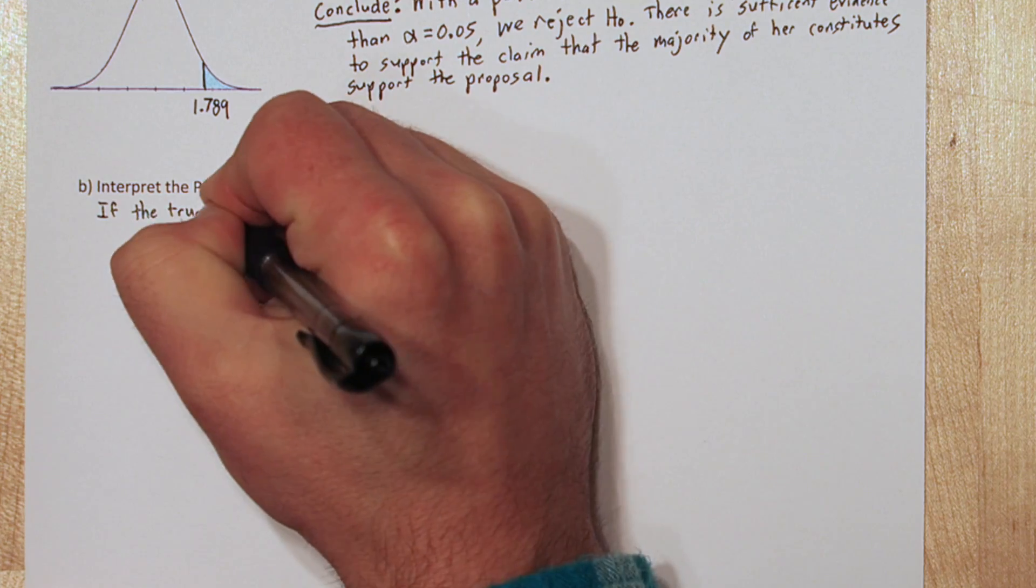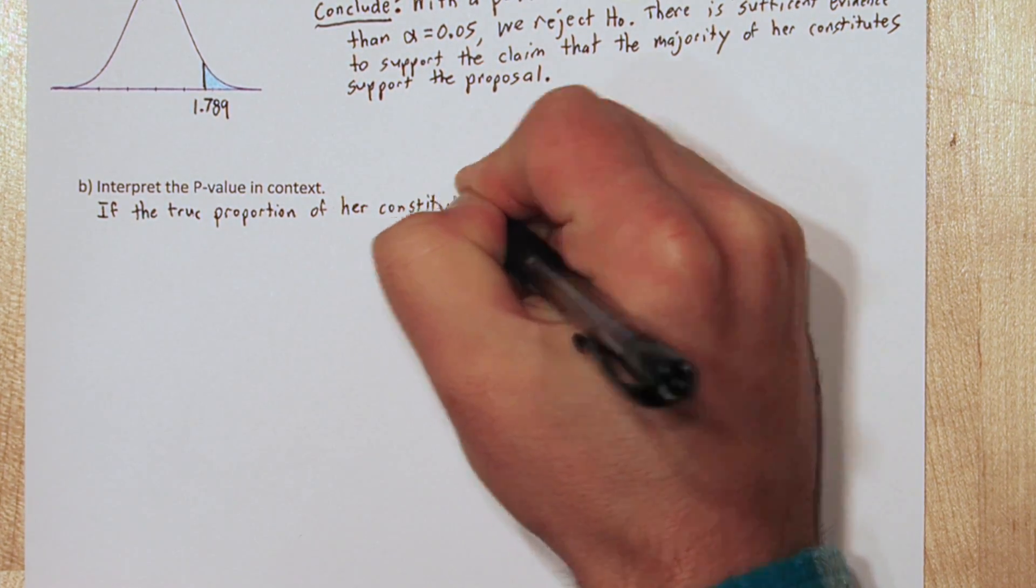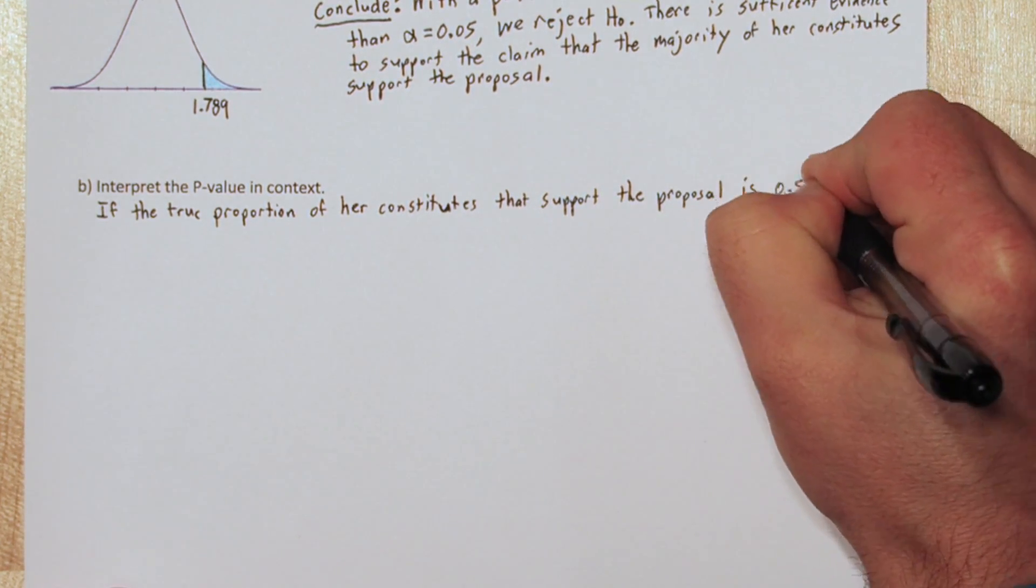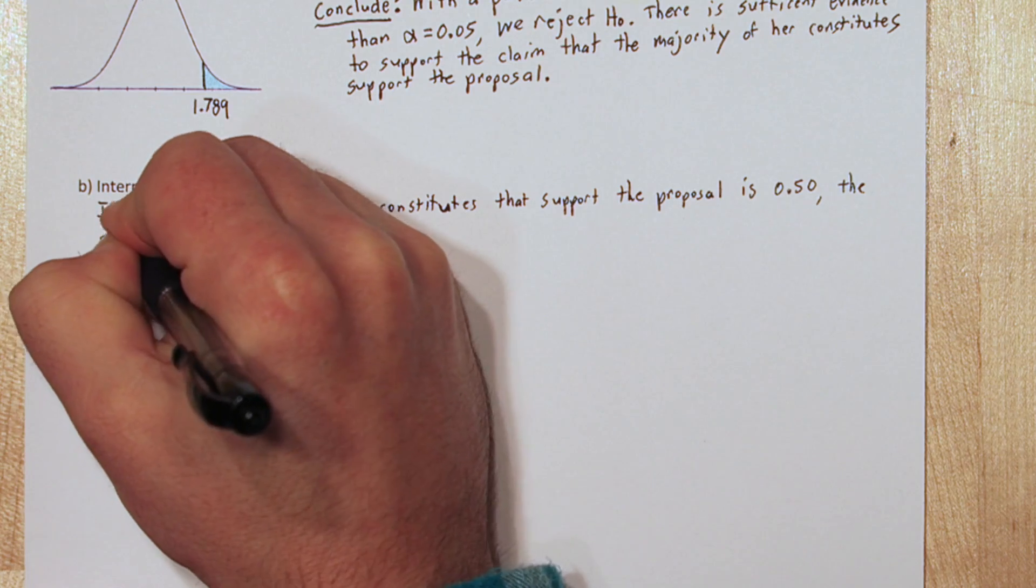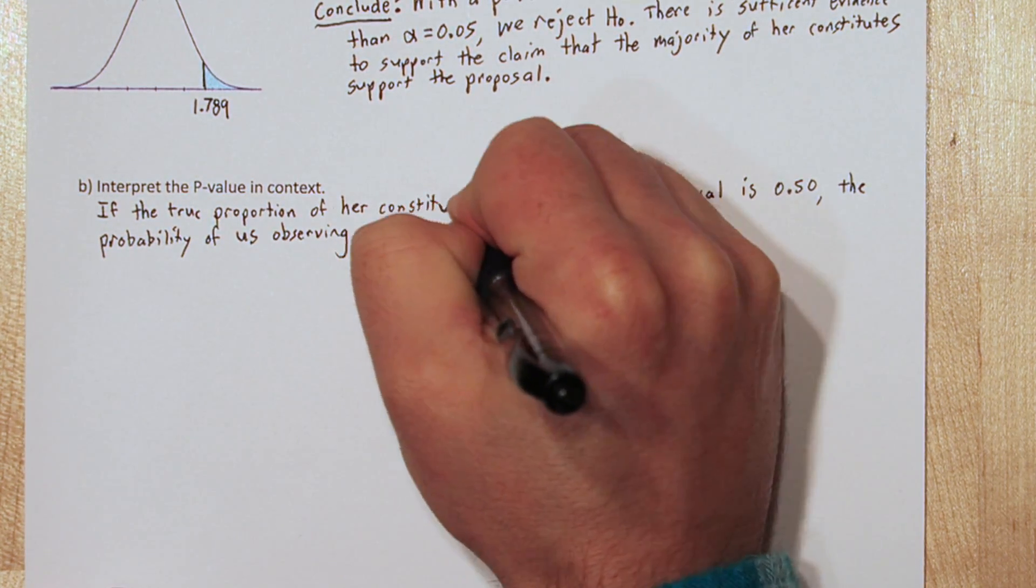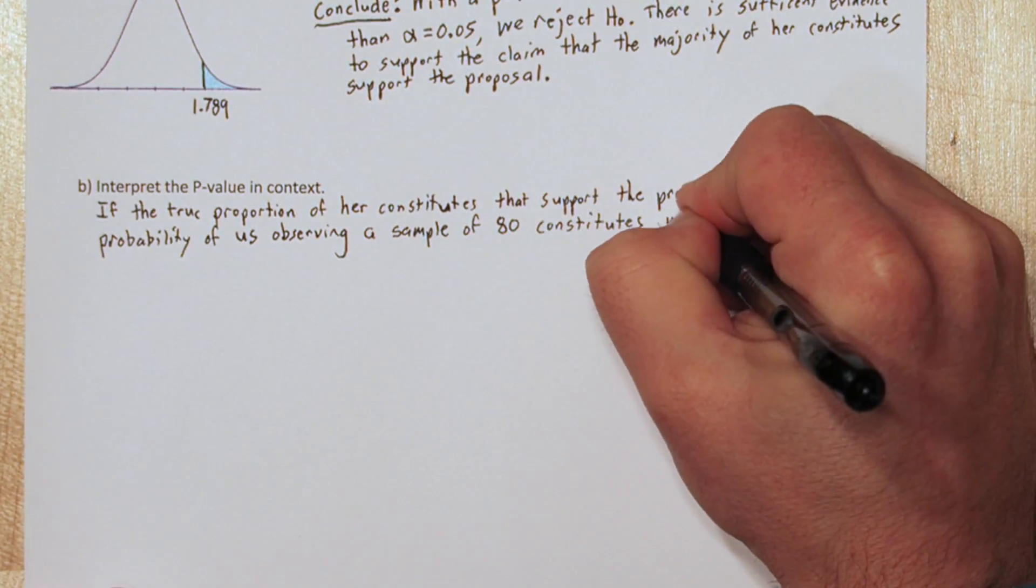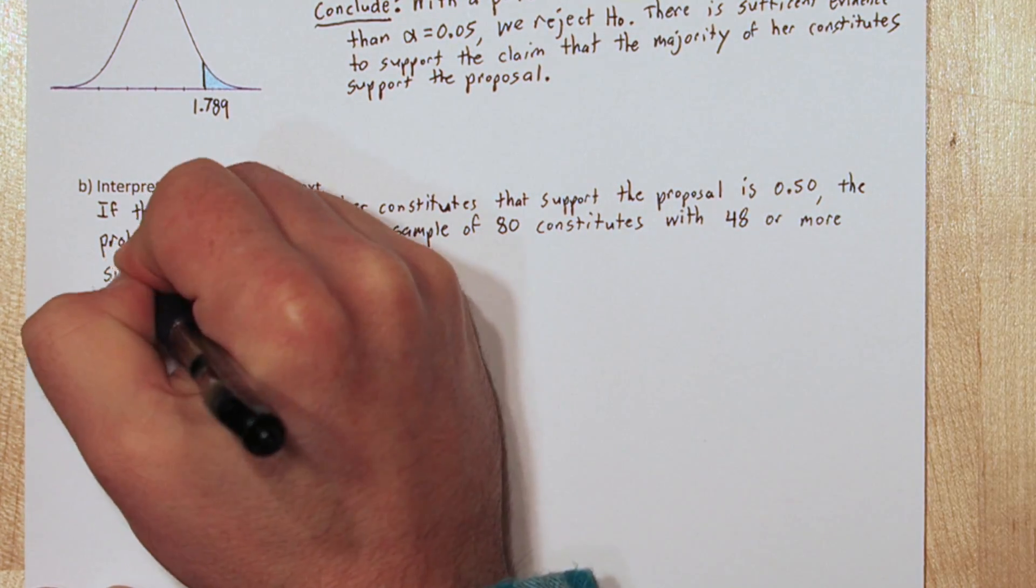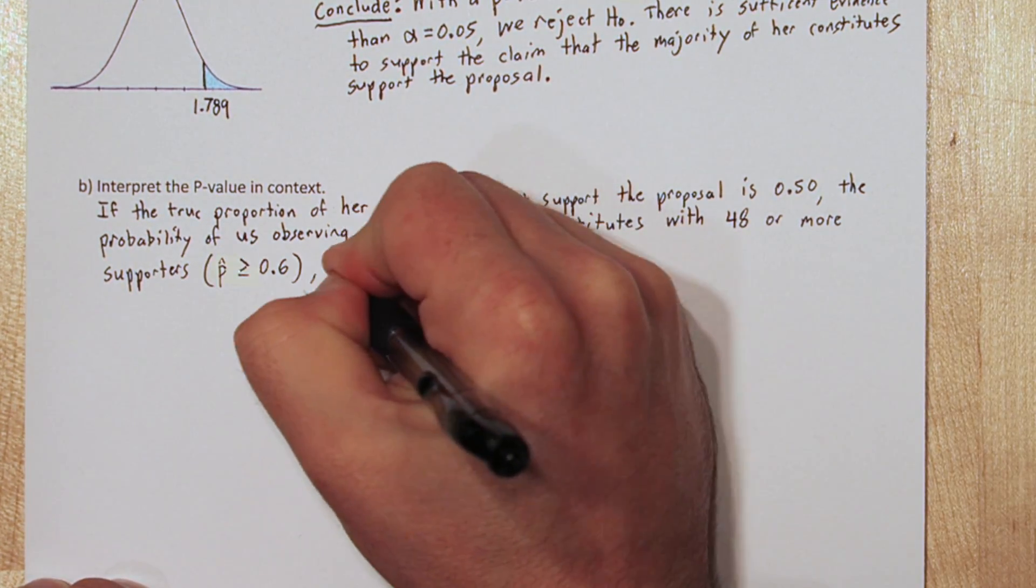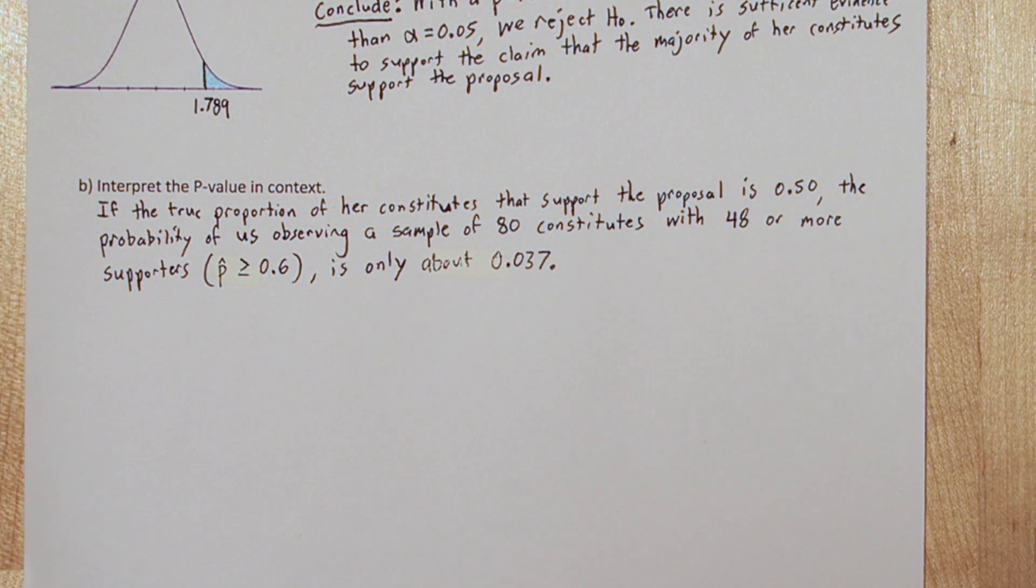Now we're ready to interpret that p-value in context, and we kind of already talked about it. If the true proportion of our constituents that support the proposal is .5, that is, if the null hypothesis is true, the probability of us getting a sample of 80 with 48 or more supporters, so 60% like we saw, is only about .037. So since this is a small probability, we reject the null hypothesis and support an alternative hypothesis, that a majority of the constituents support the claim.